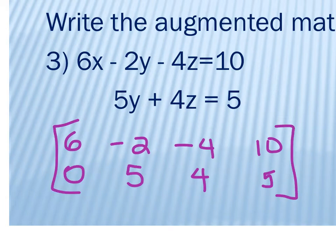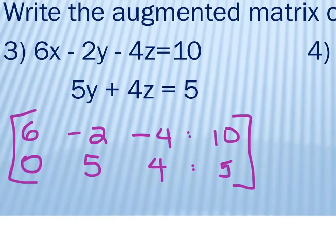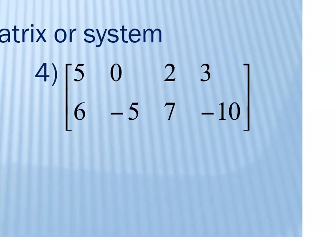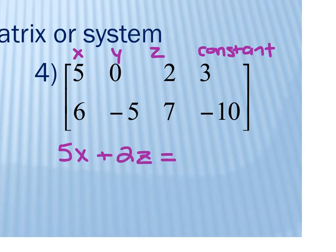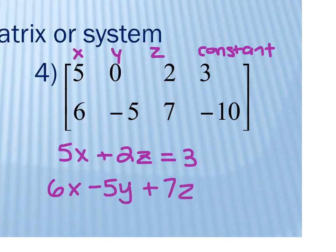You don't need the little dots, but if you did add them they would be here. We eventually lose them anyway, so I wouldn't stress too much. For number 4, we move from left to right: x, y, z, and the last column is the constant. So I get 5x plus 2z equals 3, and then 6x minus 5y plus 7z equals negative 10.